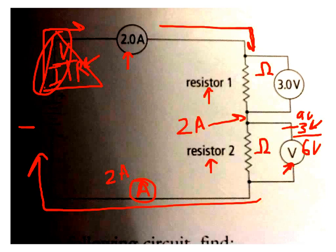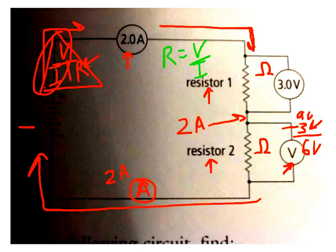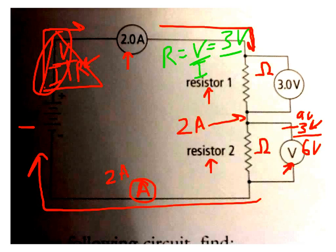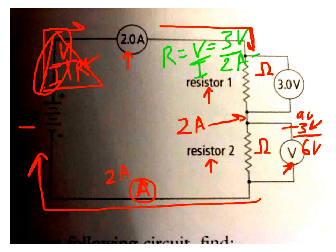Now I'm going to take R equals V over I. Or in this case, 3 volts over the current 2 amps. Because remember that the current is the same everywhere in the circuit. And that leaves me with 1.5 ohms.